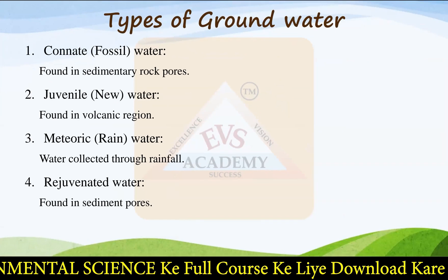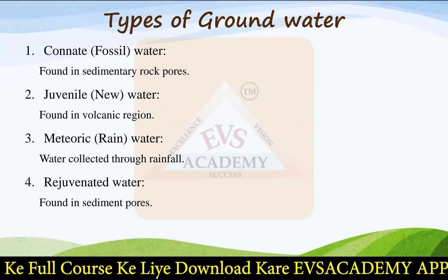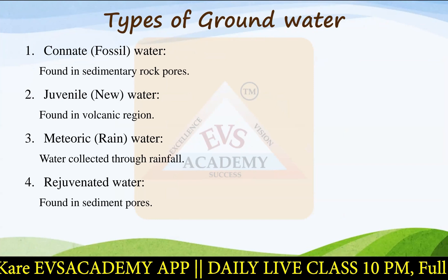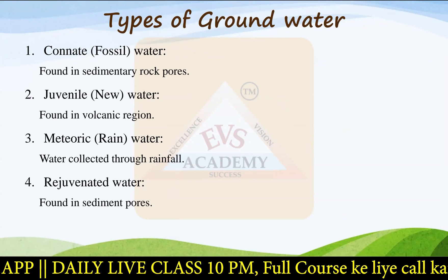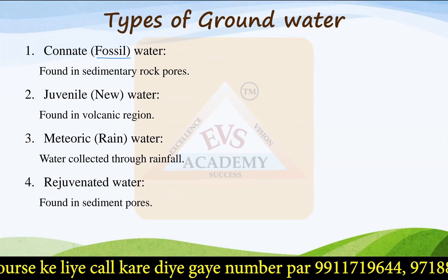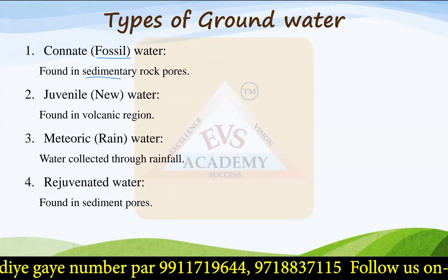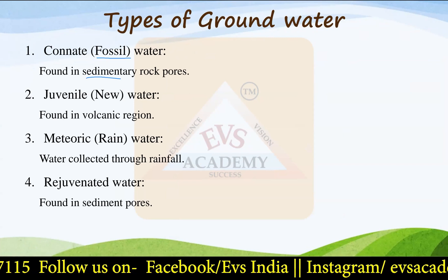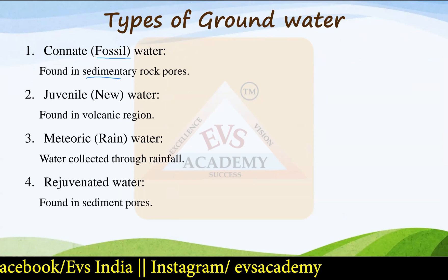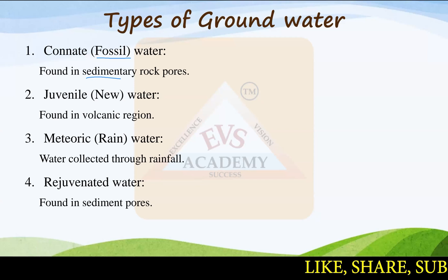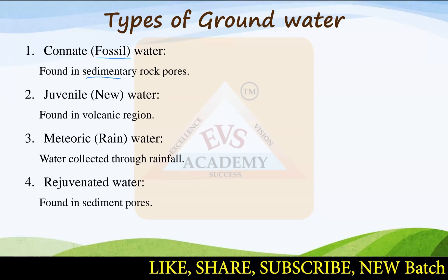Groundwater is divided into multiple types. The first type is called connate water or fossil water. This is water found in the pores of sedimentary rocks. Fossils are also found in the pores of sedimentary rocks. Sedimentary rock is one of the three types of rocks we will see in the rocks and minerals chapter. Inside sedimentary rock, fossils are formed, and any water present in those same pores can be termed connate or fossil water.